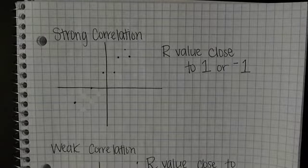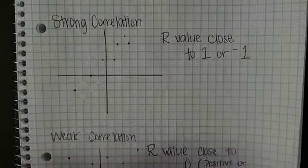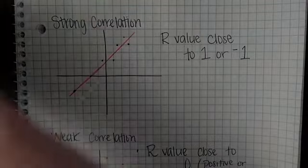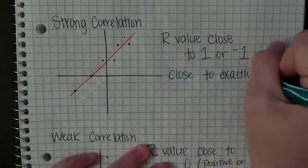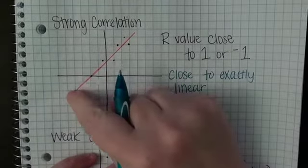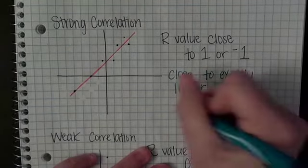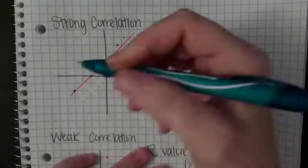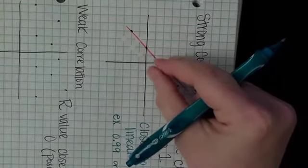The next two classifications we have for correlation is strong. Strong correlation, notice if I drew my line it's really easy to draw my line on this one. A strong is close to exactly linear. The closer these points are together, the closer it is to linear and the closer the number will be to one. An example of that could be 0.99 or even negative 0.99. It's still a strong correlation because the points are really close together.